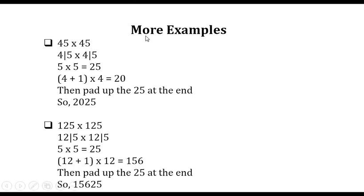More examples. 45 times 45: we separate the 5 from all other numbers, so 4, 5, 4, 5. 5 times 5 equals 25. Here we have 4 and here we have 4. Add 1 to one of the 4s: 4 plus 1 equals 5. 5 times 4, we obtain 20. So we combine the numbers: first 25, and the second 20, so 2025.